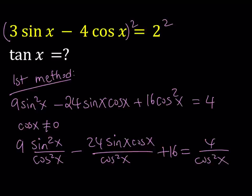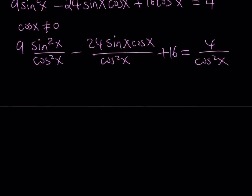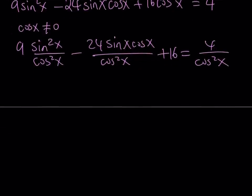You might be asking, why do we divide by cosine squared x? We do it because it's going to give us a nicer equation. We'll use some identities here. Sine squared over cosine squared equals tangent squared, so 9 tangent squared x. Here, one cosine cancels out, giving us sine x over cosine x, which is tangent x. So this gives us 24 tangent x.